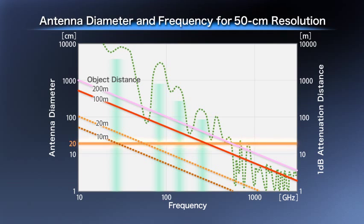140 gigahertz millimeter waves are the most appropriate for distinguishing an object 50 meters away using a small antenna having a 20 centimeter diameter. Therefore, we have researched a detector for use in the 140 gigahertz band.